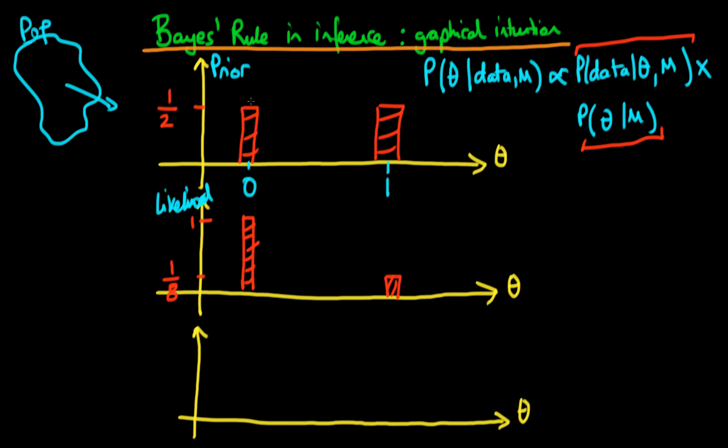So now that we have the prior and we have the likelihood, we can essentially start to compare what the posterior probabilities will look like. The way in which we do that is essentially by taking the height of each of these two bars and multiplying them by one another. So we take these first two to arrive at the posterior probability for the case when theta is equal to zero.